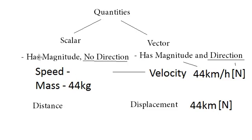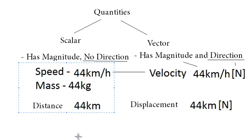A scalar is a quantity that has a magnitude but no direction. For example, a speed of 44 kilometers per hour or mass of 44 kilograms or distance of 44 kilometers. None of these examples have direction.